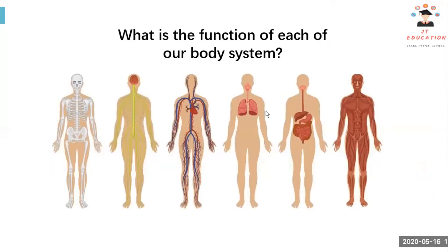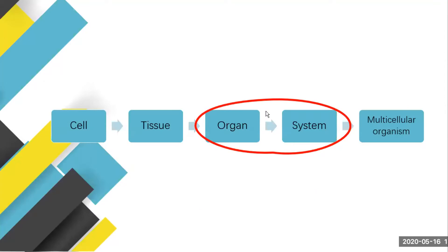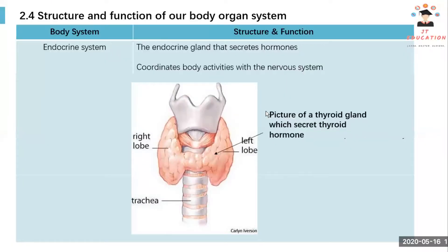So let's see what is the function of each of our body systems. Firstly, we have our endocrine system. The endocrine system contains endocrine glands — for example, the thyroid gland as shown in the picture here. This part is the thyroid gland, and it is part of the organ in the endocrine system.